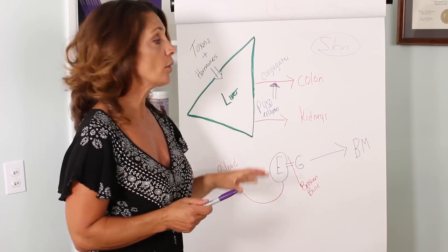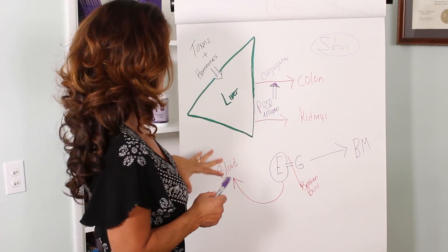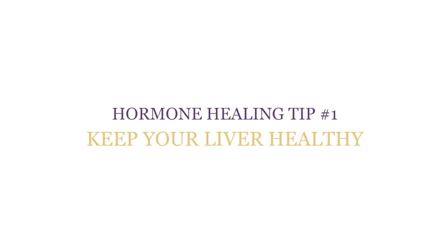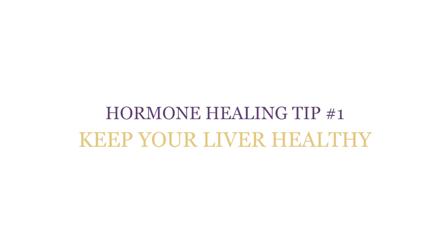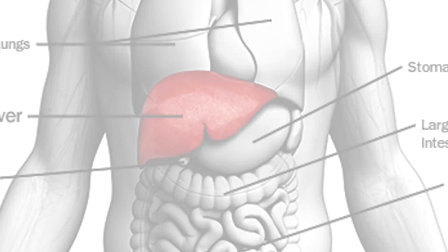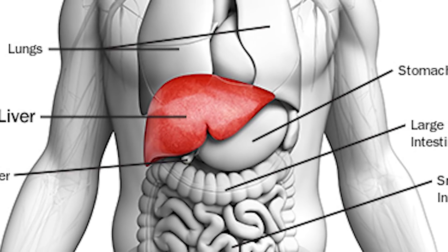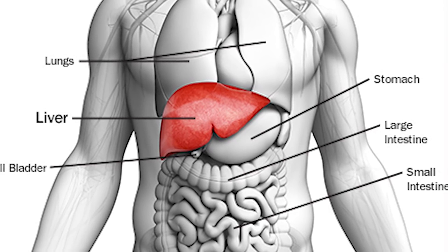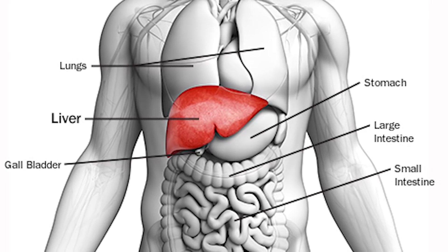So it's super important to try to get this back into balance. Now, one of the things that you can do is, number one, you need to eat foods to actually help your body, your liver, do its jobs properly. You need to provide it with the foods that it needs to actually create the conjugates, the handcuffs to get those hormones and toxins out of the system.